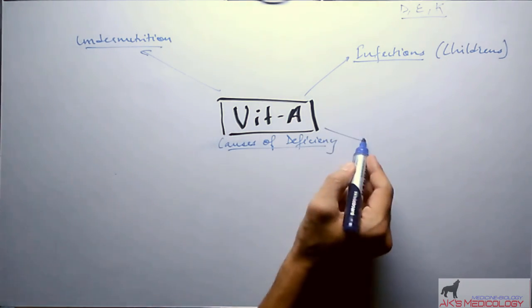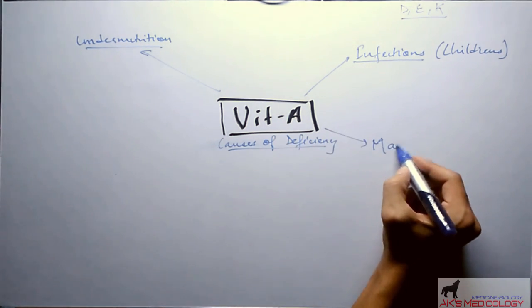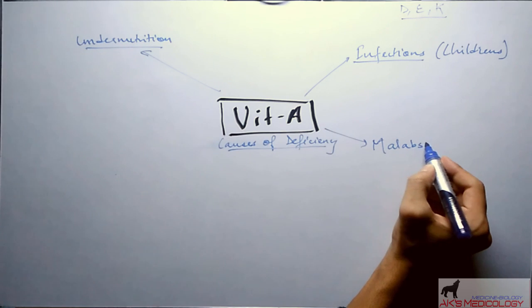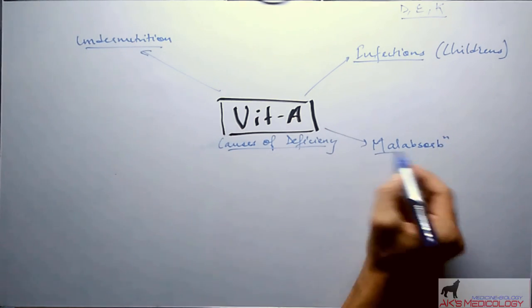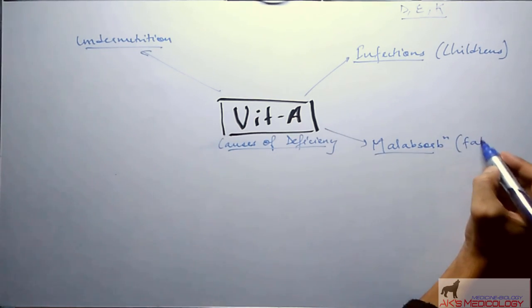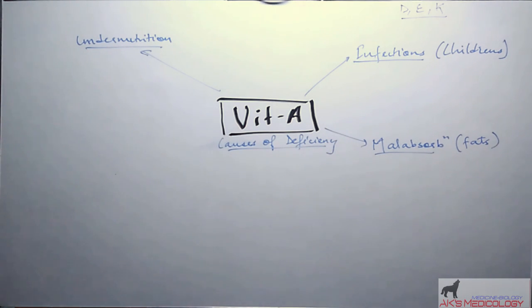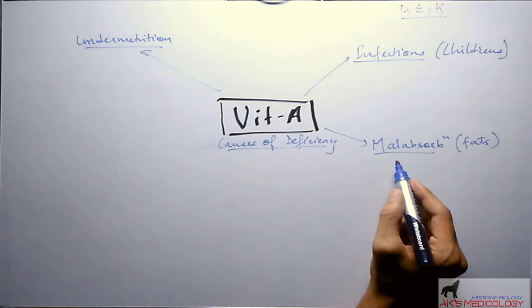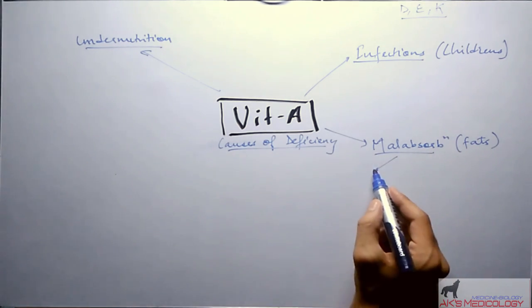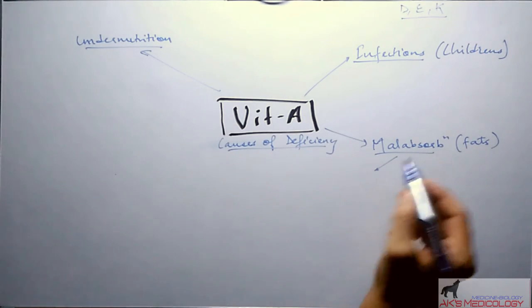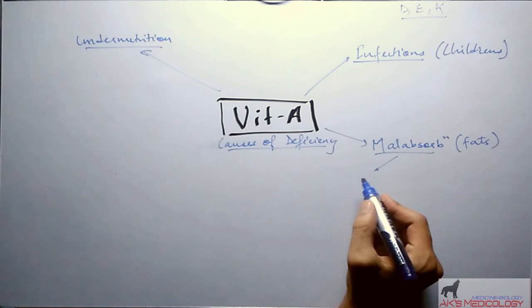Third and the most important being malabsorption. Malabsorption of fats, as vitamin A is a fat-soluble vitamin. Malabsorption may also be caused due to various further diseases, malabsorption then being the secondary cause.